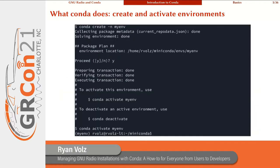One thing conda does is it allows you to create and activate isolated environments. So you can type `conda create -n` and then the name of an environment, and it'll create a directory for storing that environment. Then you can type `conda activate` and then the name of the environment, and it'll put you at a prompt where programs within that environment are on your path, so you can execute them without interference from your base system.